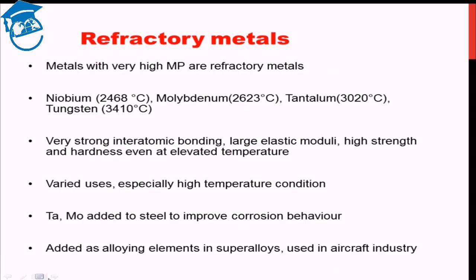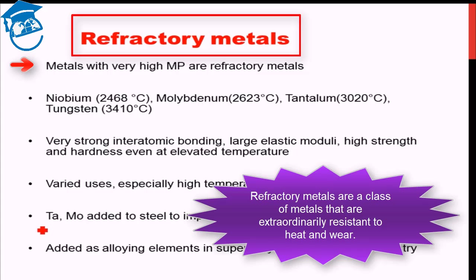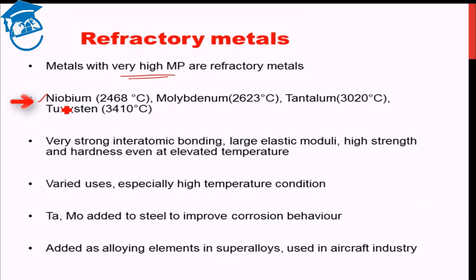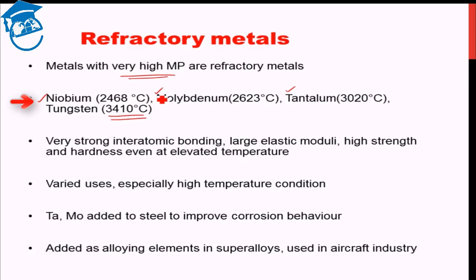Next, let us look at refractory metals. As the name suggests, refractory metals are metals with very high melting points. Examples include niobium at 2468°C, molybdenum at 2623°C, tantalum at 3020°C, and tungsten — the highest melting point metal known — at 3410°C. Comparing this to aluminium at 660°C or even titanium at 1668°C, these melting points are drastically higher.